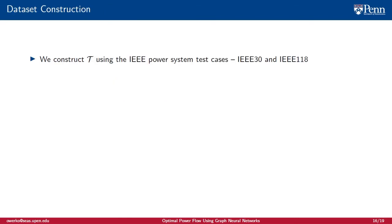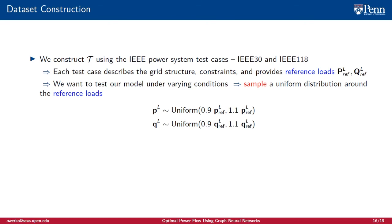To construct the dataset T, we use an IEEE power system test case. We create two datasets, one for the IEEE 30 and one for the IEEE 118 test case. Each test case describes the grid structure, constraints, and provides reference loads. To train and test our model on varying loads, we generate these loads by taking samples from a uniform distribution about the reference loads.